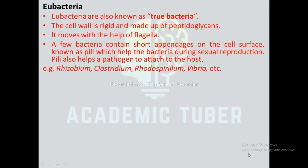Eubacteria: Eubacteria are also known as true bacteria. The cell wall is rigid and made up of peptidoglycans. They move with the help of flagella. A few bacteria contain short appendages on the cell surface known as pili, which help the bacteria during sexual reproduction. Pili also help a pathogen to attach to the host. Examples: Rhizobium, Clostridium, Rhodospirillum, Vibrio, etc.